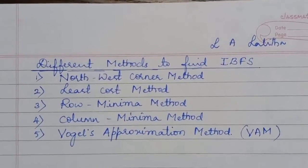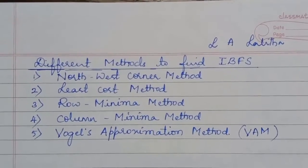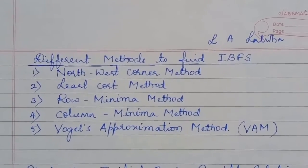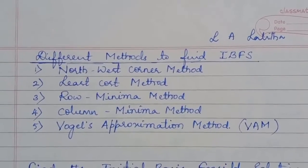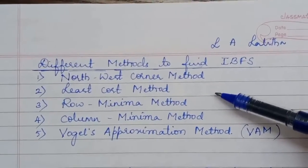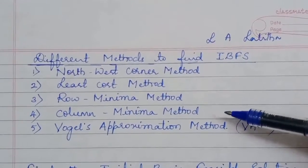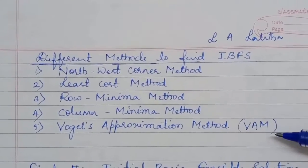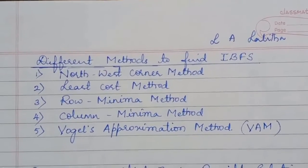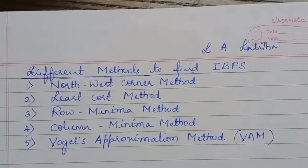Hello everyone. In the previous session we were discussing the different methods available to find the initial basic feasible solution for the transportation problem: northwest corner method, least cost method, row minima method, column minima method, and Vogel's approximation method. In the last session we solved a transportation problem to find the initial basic feasible solution using the northwest corner method.